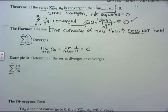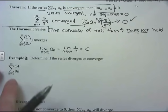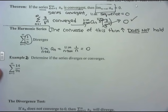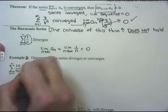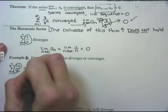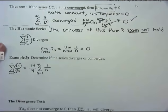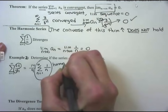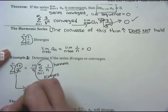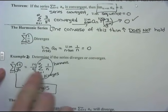Example 2: determine if the series diverges or converges. I have a summation from 1 to infinity of 14 divided by 9n. The constant 14/9 is not affected by n, so I pull it out in front of the summation, leaving the summation from 1 to infinity of 1/n — the harmonic series. Since the harmonic series diverges, a constant times something that diverges means this whole series diverges.